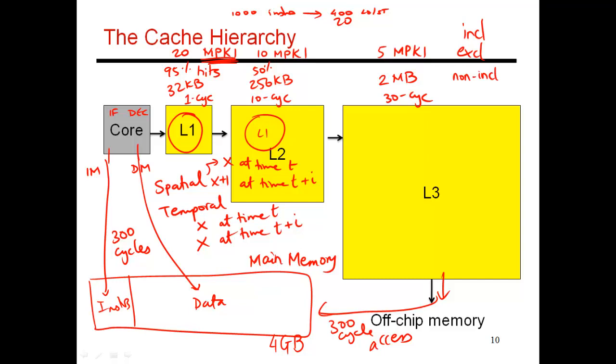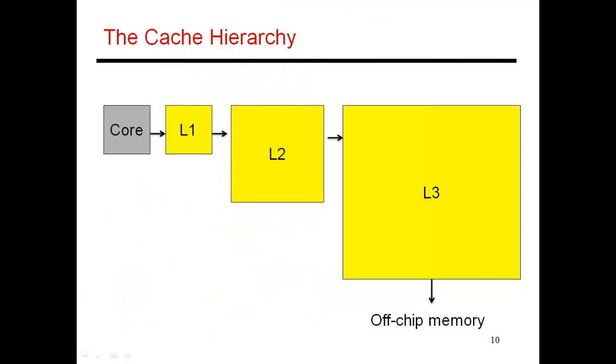So having talked about an L1, L2, and L3, let me clear out the screen a little bit. So now let me talk about how multiple cores will access the L1, L2, and L3, and so on. So as I said, there are many cores sitting in your processor. This is a multi-core processor.